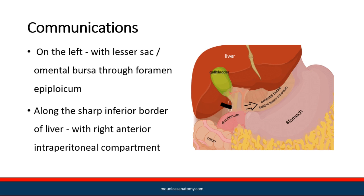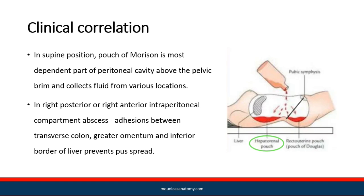Communication also occurs with the right anterior intraperitoneal compartment. Clinical correlation: in the supine position, the pouch of Morrison is the most dependent part of the peritoneal cavity above the pelvic brim, and collects fluid from the right posterior or right anterior intraperitoneal compartment. Abscess and adhesions formed between the transverse colon, greater omentum, and inferior border of the liver prevent the spreading of pus into each compartment.